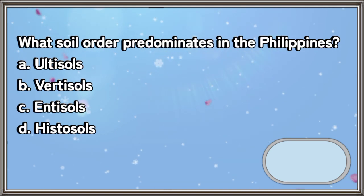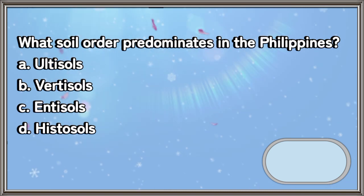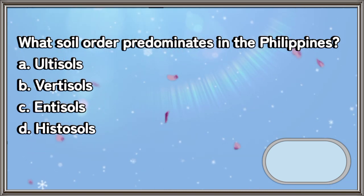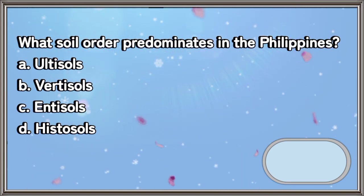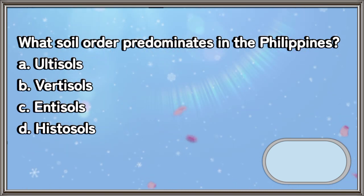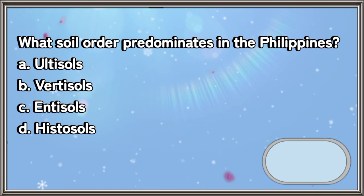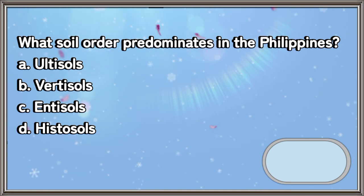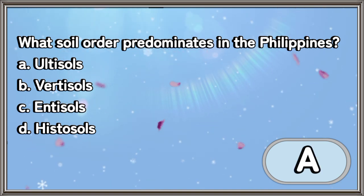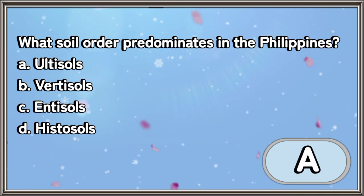What soil order predominates in the Philippines? A. Ultisols, B. Vertisols, C. Entisols, D. Histosols. The answer is letter A.